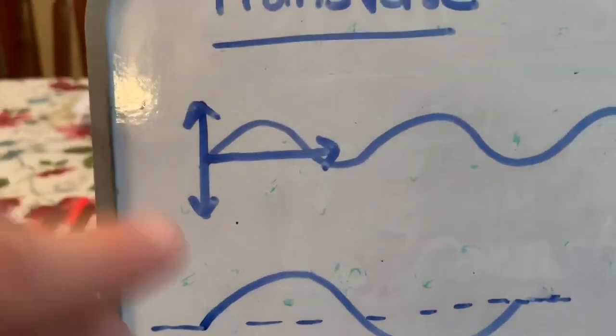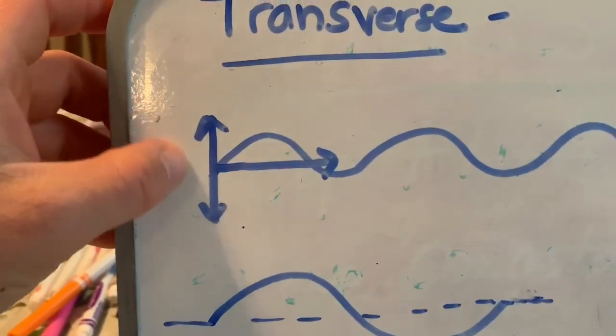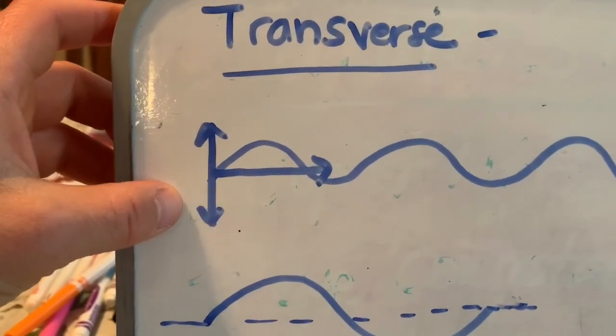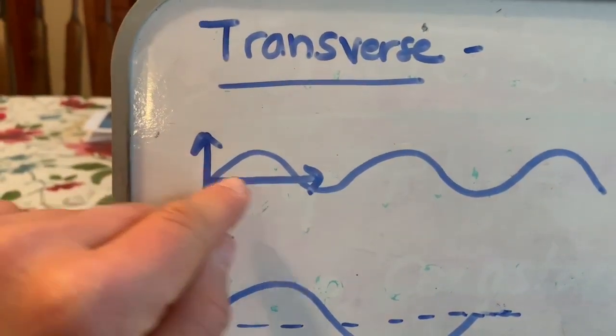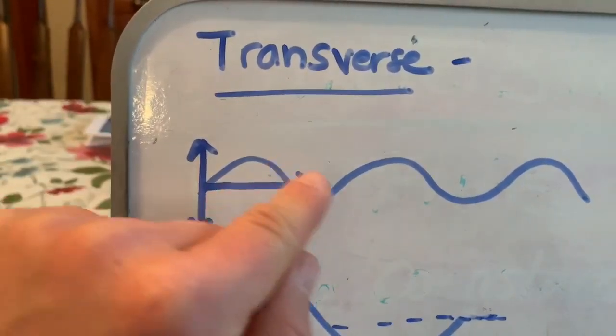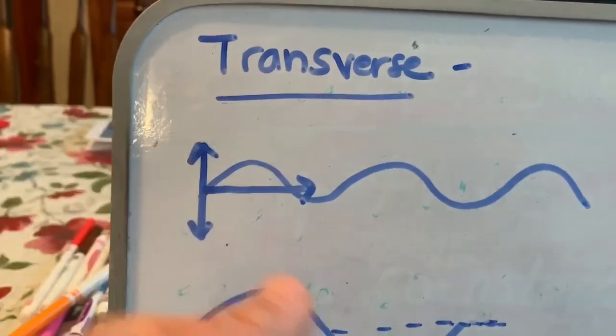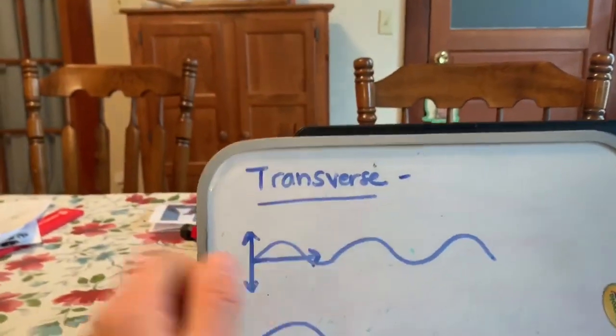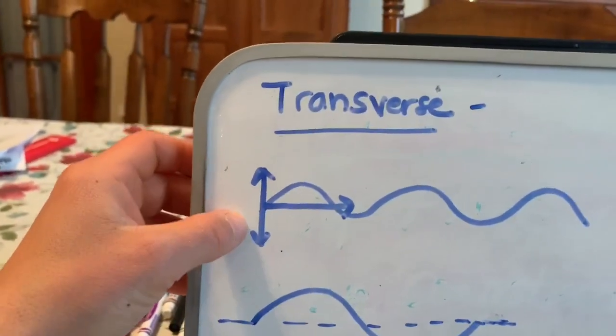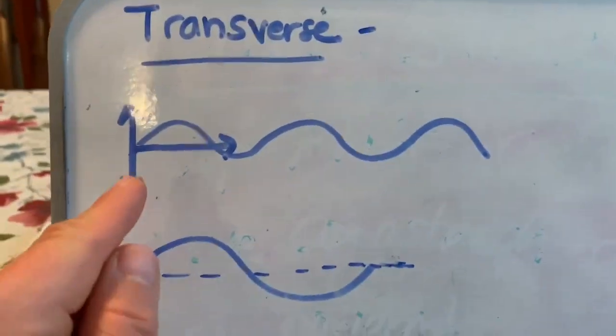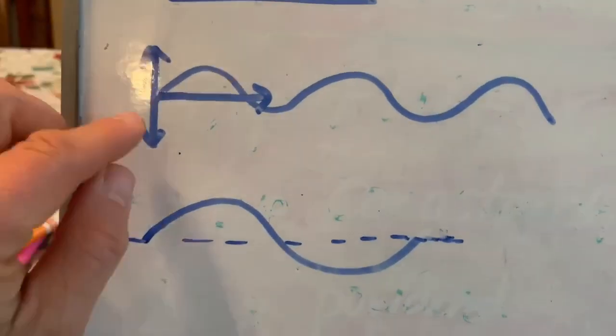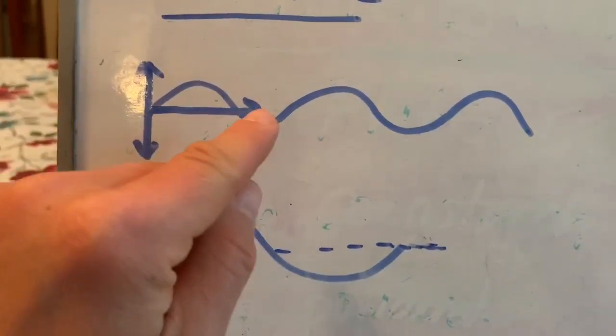The reason that they're transverse waves is because the disturbance, the thing that's creating the wave, is perpendicular to the direction that the wave actually travels in. For example, if this was a rope and I were to take it and move it up and down, my hand would be moving it up and down but the waves would go out that way. So the disturbance is perpendicular to the way that the wave is actually moving.